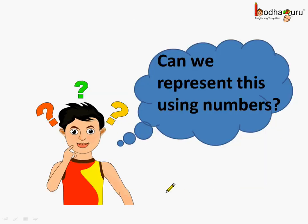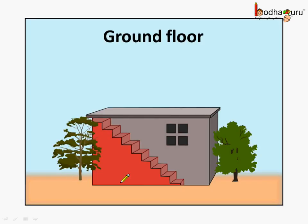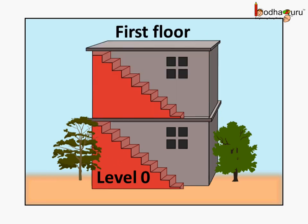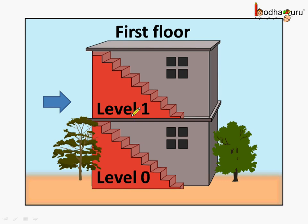Can we represent this using numbers? Since this floor is at ground level, we call it ground floor, and let us call it level 0. We added one more floor on the top of the existing floor and we call it first floor, so let us call it level 1. As we are adding on the top of level 0, we call it level 1.